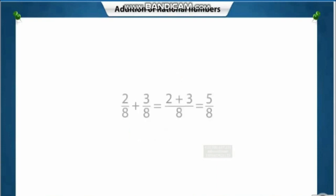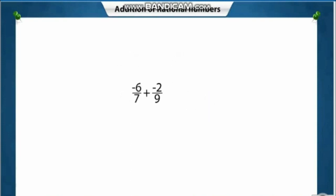Now add the numerators to get the total fraction. Andy and Agamud together had 5 by 8 of the pizza.